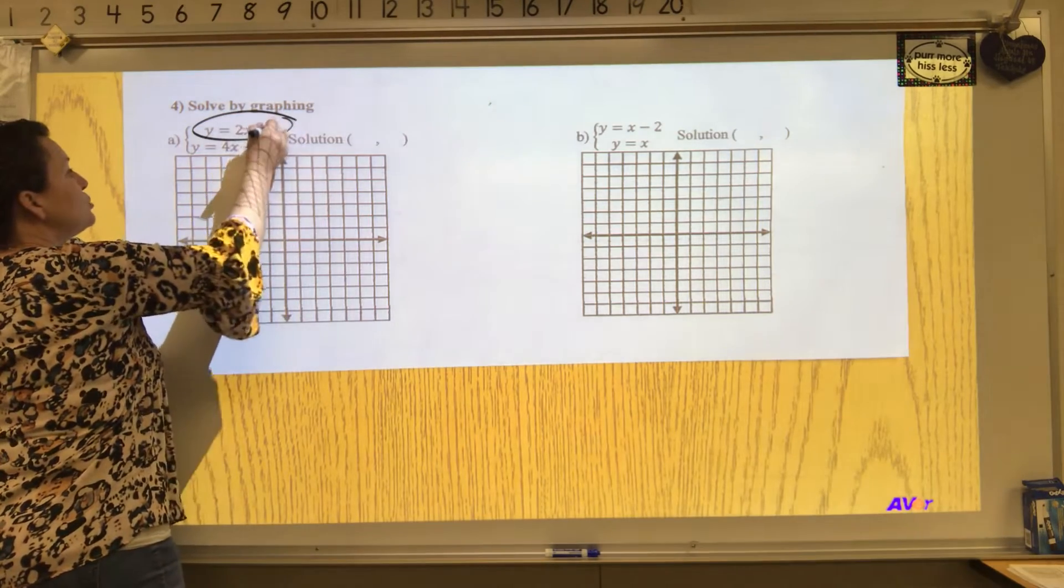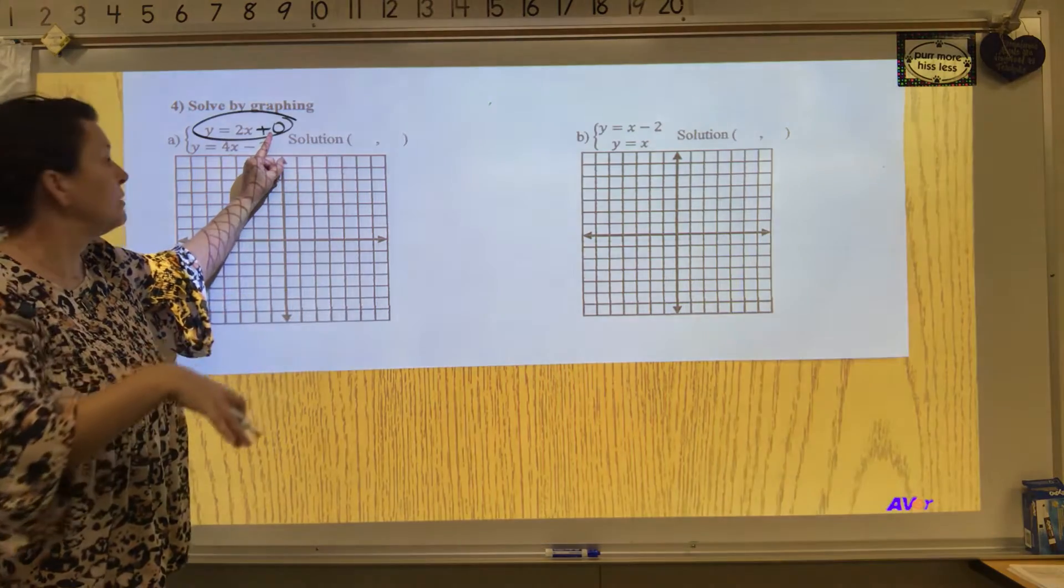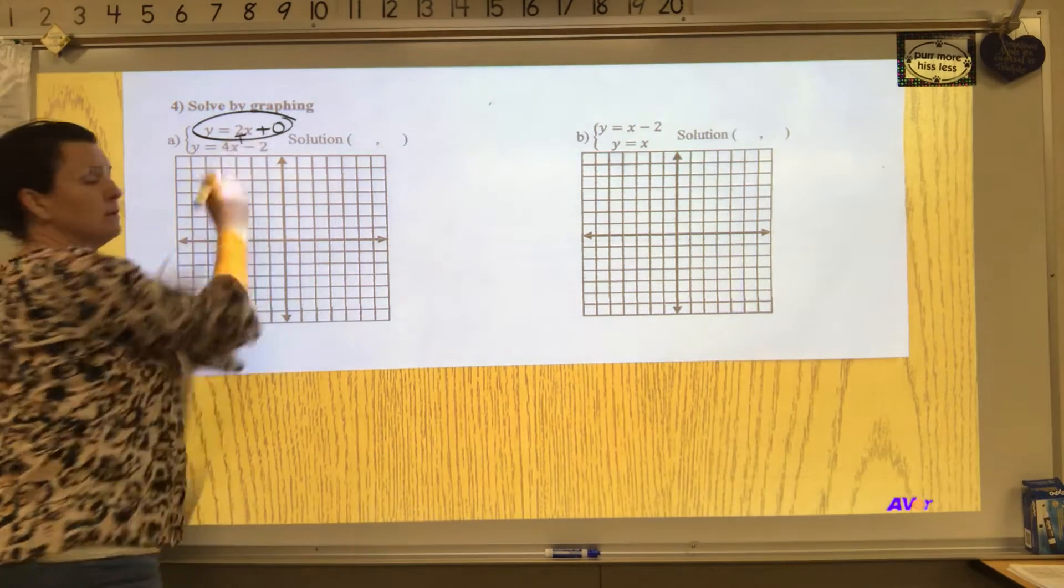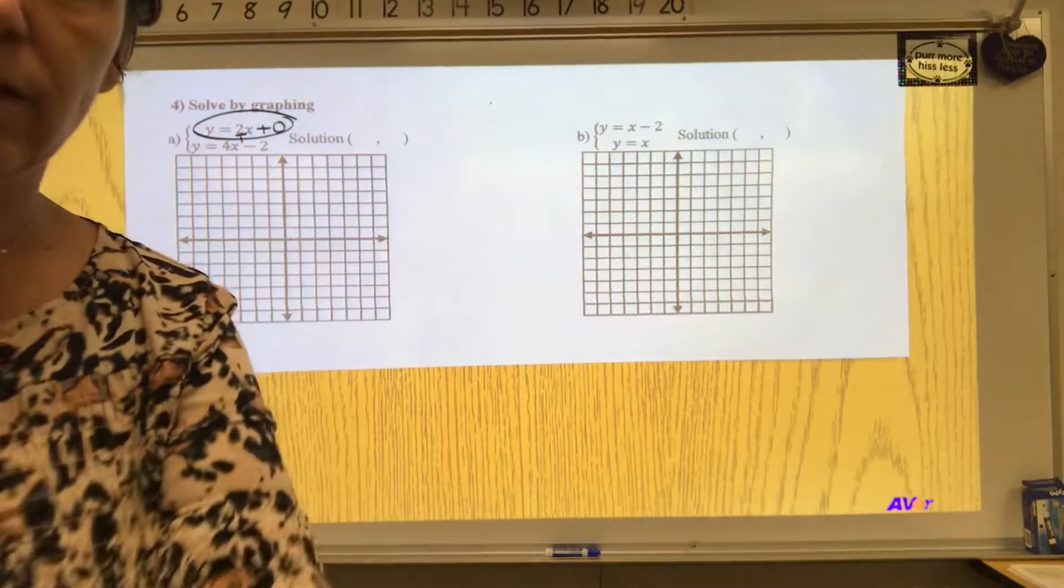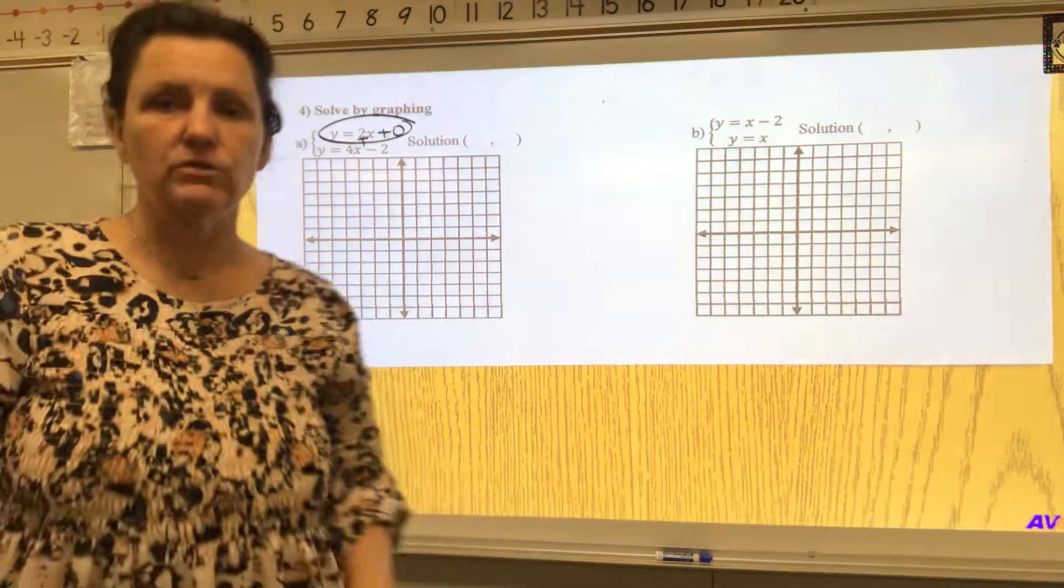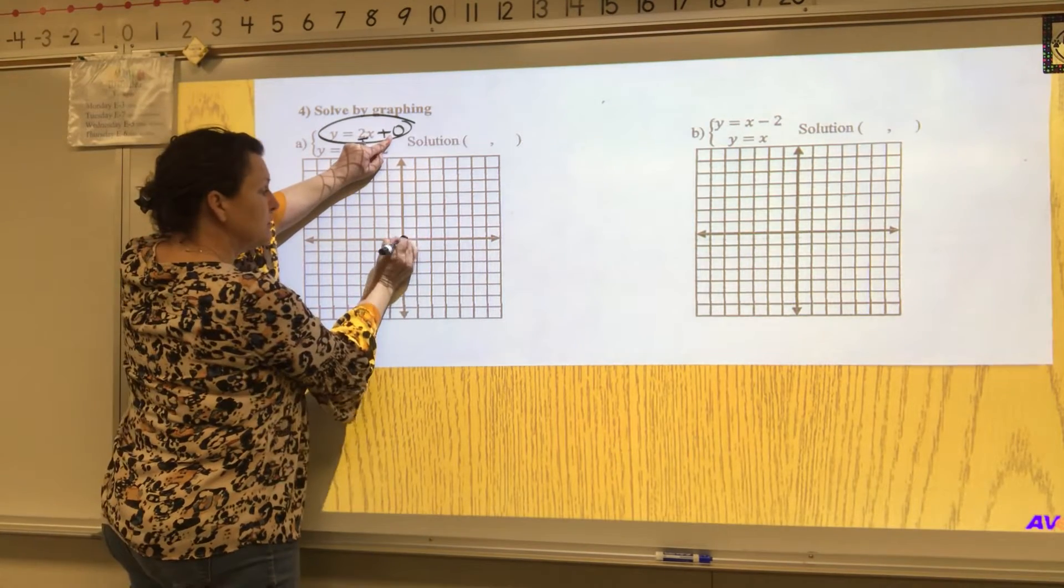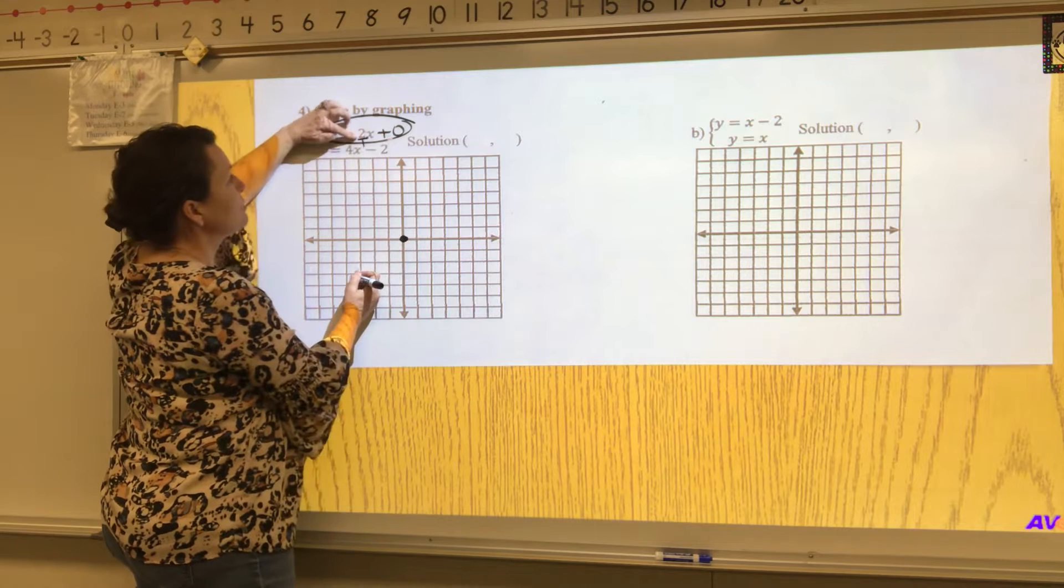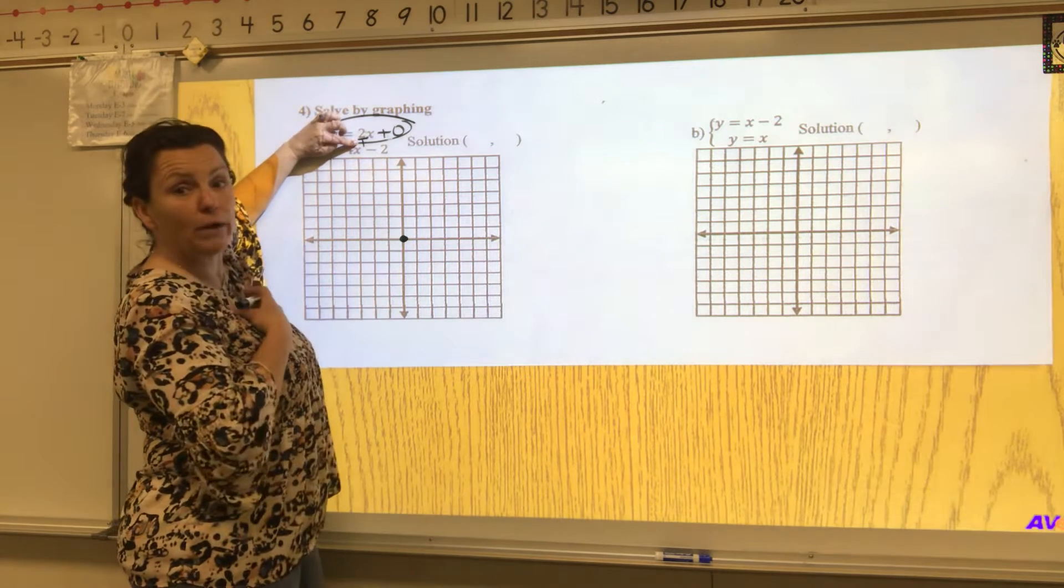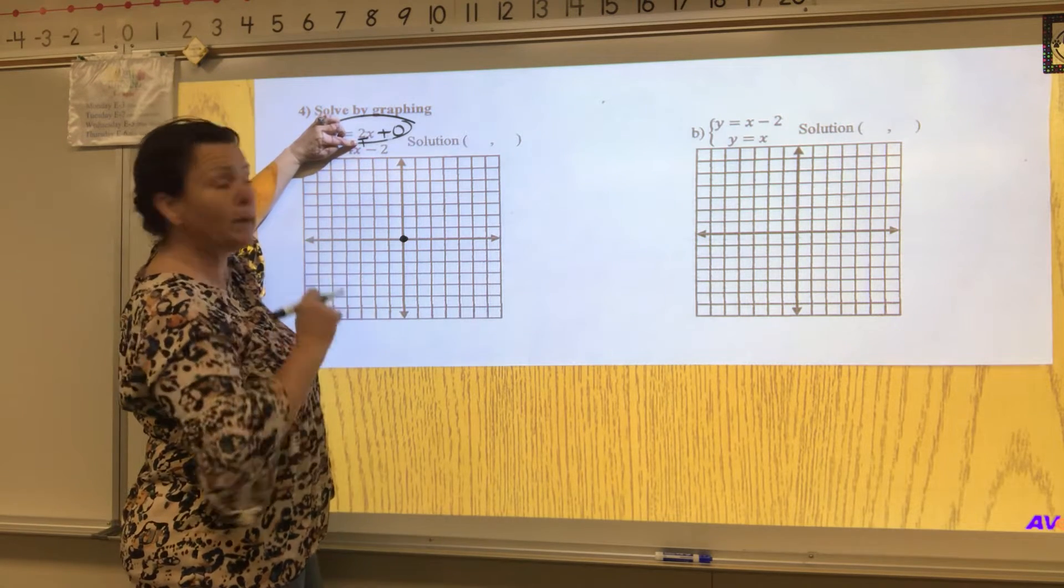So when we graph we need two things: a starting point, if we don't see it we add the zero, and we need a slope. Our slope should be a fraction. So we're going to start with our origin zero zero, and then our slope is 2 over 1, two on the top one downstairs. You can make anything a fraction by placing a one on the bottom if it's not a fraction already.